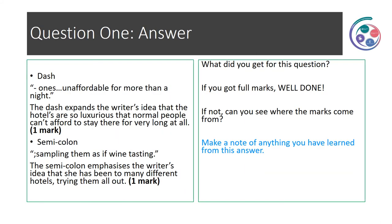Answer to question one. First, we notice the dash: 'ones unaffordable for more than a night.' The dash expands the writer's idea that hotels are so luxurious that normal people can't afford to stay there for very long at all. Note that an ellipsis has been used because it's a long quote and not all of it is necessary to make the point. The next technique is the semicolon: 'sampling them as if wine tasting.' The semicolon emphasises the writer's idea that she's been to many different hotels trying them all out. That would get your second mark.